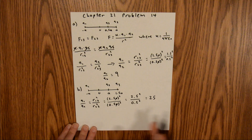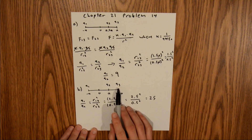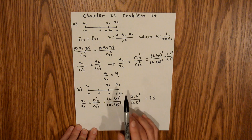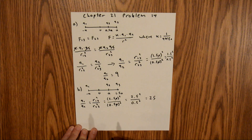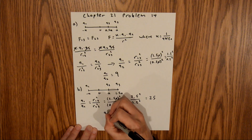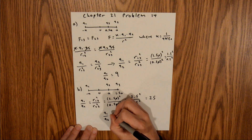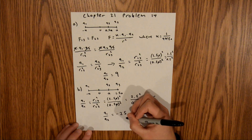There is a catch with this part of the problem. Since q3 is not in between q1 and q2, either q1 or q2 must have a negative charge, so the ratio will be negative. Therefore, the final answer for q1 over q2 for part b is equal to negative 25.